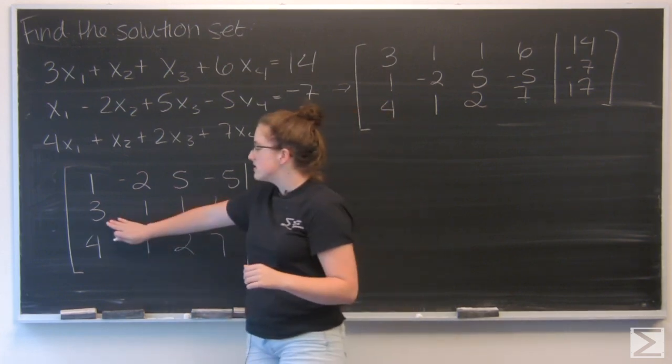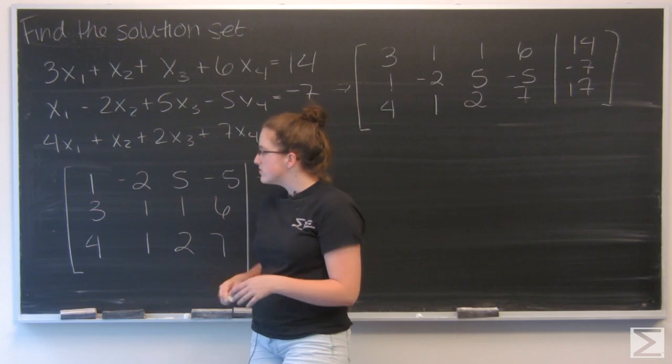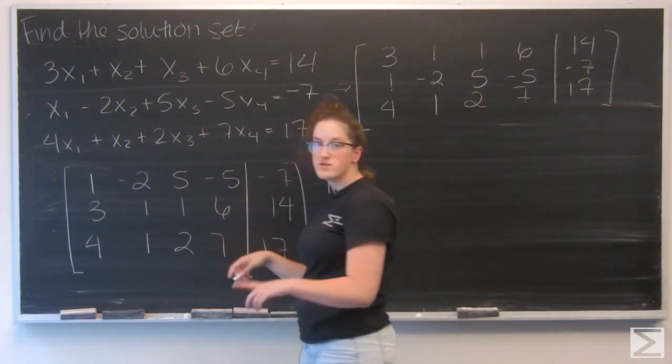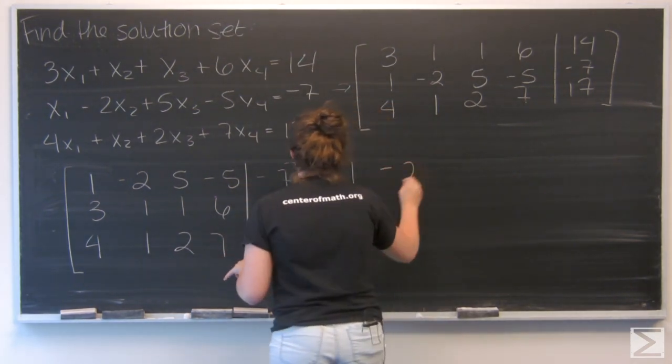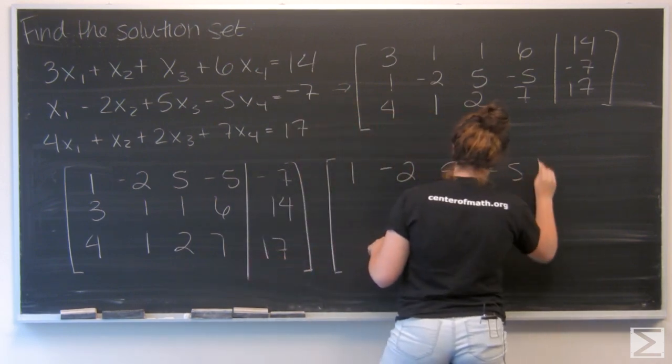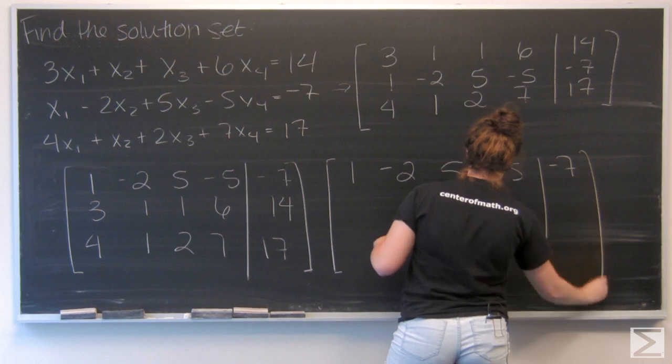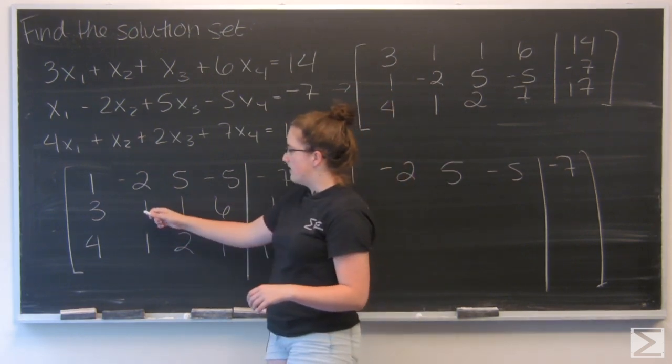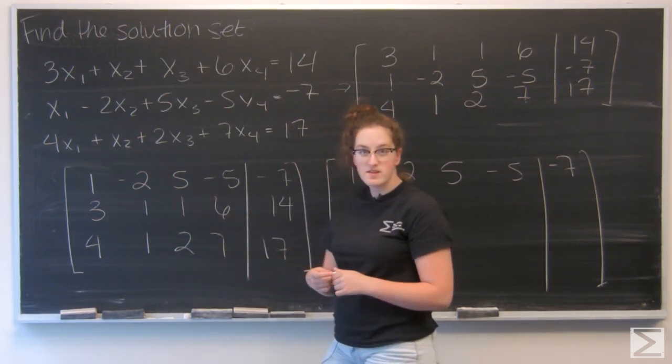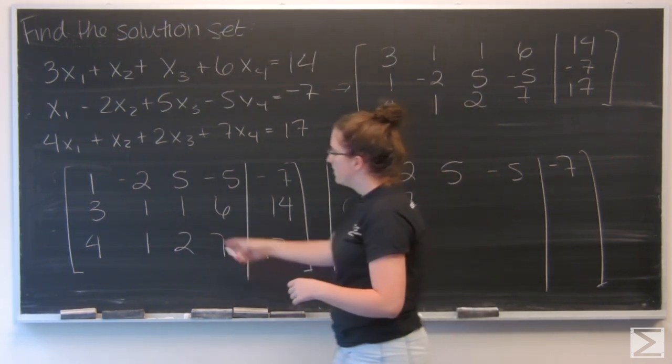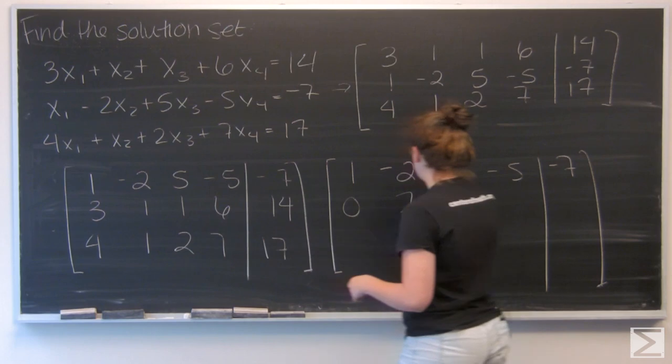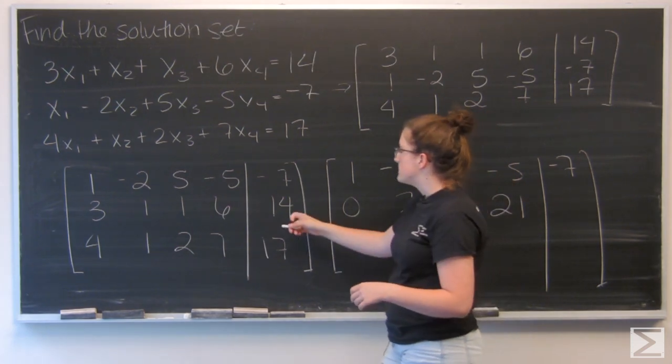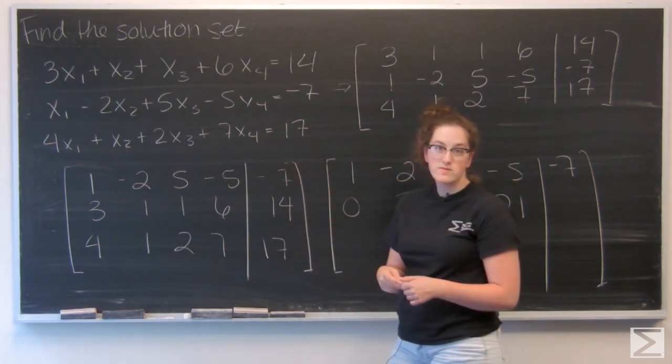Now I want to put zeros below that leading one. So to do that I'm going to subtract three times the first row from the second row. So I'm going to copy the first row over, nothing's going to change. And for the first element I'm going to get three minus three gives me zero. Then I have one plus six is going to give me seven, one minus fifteen negative fourteen, six plus fifteen positive twenty-one, and fourteen plus twenty-one gives me thirty-five.